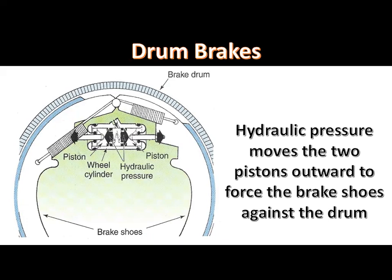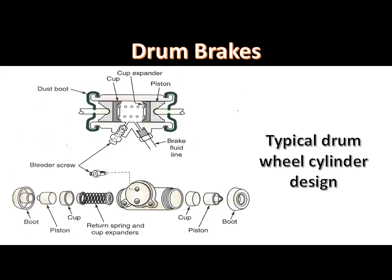In a drum brake system, the brake shoes are forced outward against the drum by the wheel cylinder pistons. Each wheel cylinder contains two pistons and cup seals with expanders, which prevent air from entering the system when the pistons and cups are moving. A spring is positioned between the piston cups. A rubber dust boot is mounted on each end of the wheel cylinder. The push rods are located between the pistons and the brake shoes, fitting snugly in the dust boot openings to keep contaminants out. The wheel cylinder is bolted to the backing plate and a bleeder screw is mounted in the back to allow air to be bled from the system.